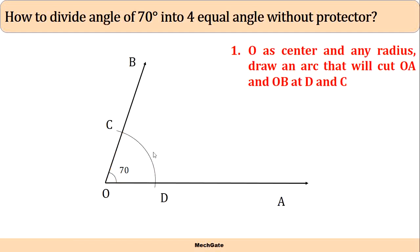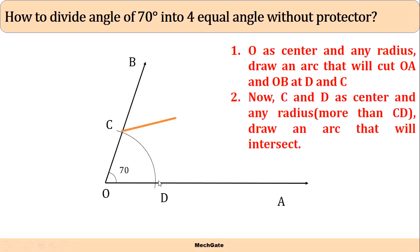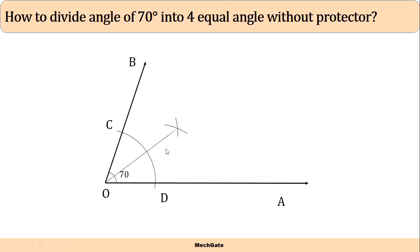Now you have two points C and D. With C and D as centers and any random radius greater than CD, draw arcs that intersect at point E. Join this point E with O. Now we have divided our 70 degree angle into two equal parts.